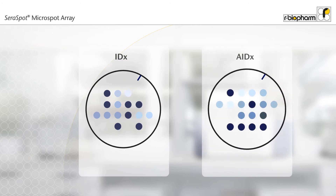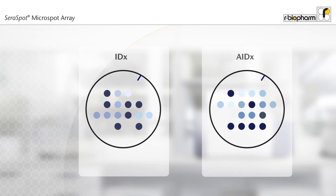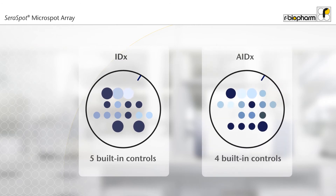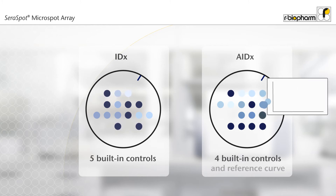On top of well-chosen antigens, every Sarah Spot array contains either five or four built-in controls. Arrays for autoimmune diagnostics contain additional spots to create a reference curve.